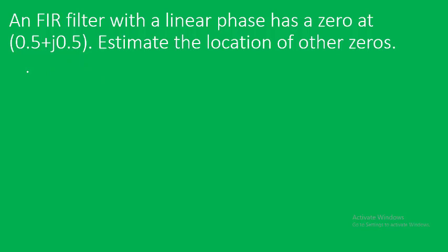Let us consider this example: an FIR filter with a linear phase. It is clearly mentioned that it is with linear phase. From the symmetry properties we saw earlier, if it is linear phase then there are certain symmetry properties it follows. If we plot it on the z-plane, this is the real axis and this is the imaginary axis. At 0.5 on both axes, at their intersection, we have a zero location.